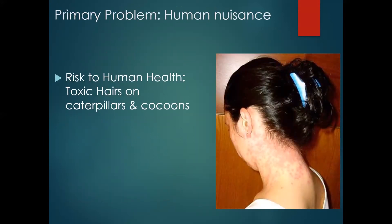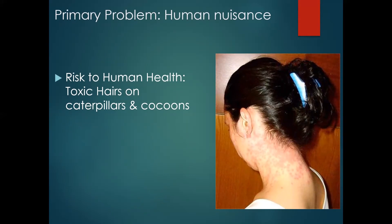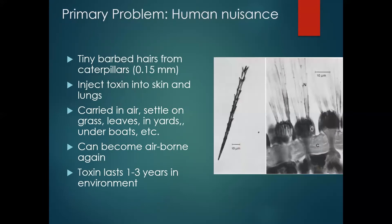The primary problem with browntail moth is that it's a human health risk. I'm sure those of you who have had the rash do not need me to explain — it is very itchy and uncomfortable. The reason it's so irritating is that the caterpillars are covered in small toxic hairs, and these hairs are barbed. So you're not only getting a mechanical irritation — they're hollow and filled with toxins, giving you both a mechanical and a chemical irritation.